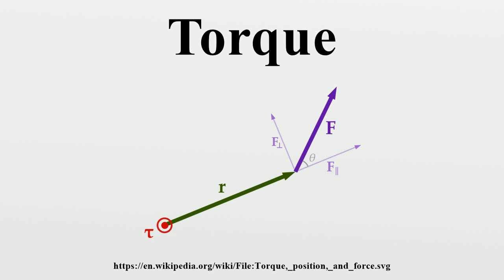More generally, the torque on a particle can be defined as the cross-product, where R is the particle's position vector relative to the fulcrum, and F is the force acting on the particle. The magnitude τ of the torque is given by where R is the distance from the axis of rotation to the particle, F is the magnitude of the force applied, and θ is the angle between the position and force vectors. Alternatively, where F is the amount of force directed perpendicularly to the position of the particle; any force directed parallel to the particle's position vector does not produce a torque. It follows from the properties of the cross-product that the torque vector is perpendicular to both the position and force vectors.